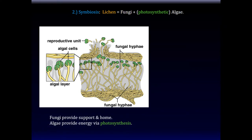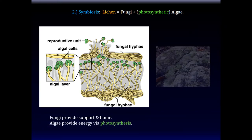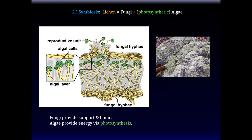So, a lichen is an example of a symbiotic relationship between a fungus and photosynthetic algae.